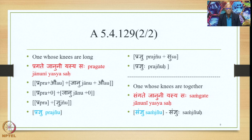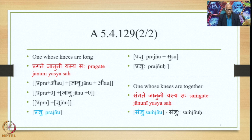We then add the suffix Su: Pratnyu + Su, giving the form Pratnyu when the Samasa qualifies a masculine entity. Similarly, when the meaning is 'one whose knees are together,' the Laukika Vigraha is Sangate Januni Yasyasaha. By the same process, we derive the finally derived Bahuvrihi Samasa output Saudnyu, and the Prathama Ekavachana would be Saudnyu.